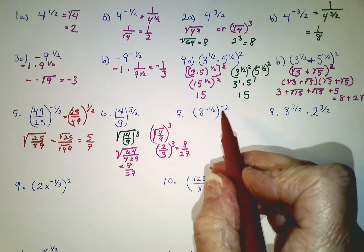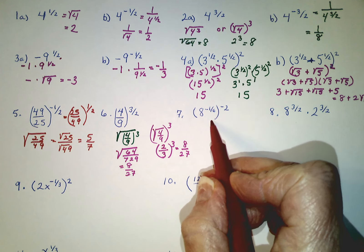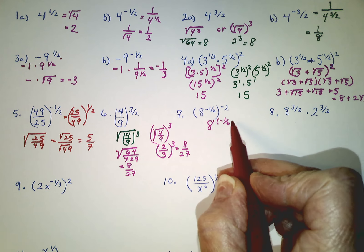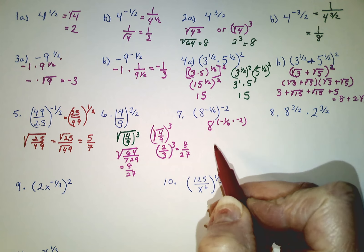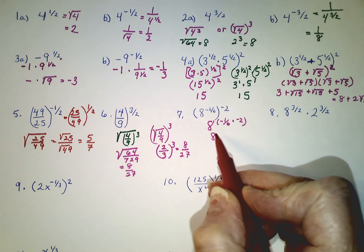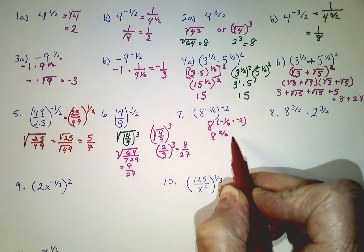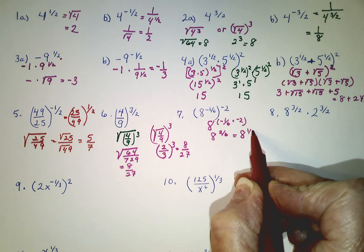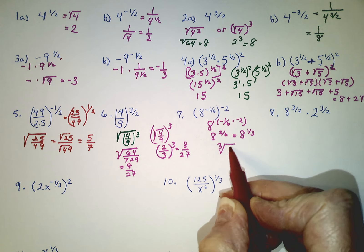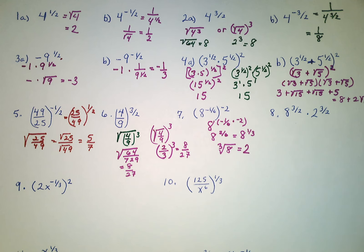For this one, we can just apply the power of a power rule. This is going to be the same as 8 to the negative one-sixth times negative 2 — just multiply the exponents together. That's going to make it 8 to the positive 2 sixths. We can reduce that fraction — that would be 8 to the one-third, which means the cube root of 8. And 2 times 2 times 2 gives us 8, so the answer is 2.